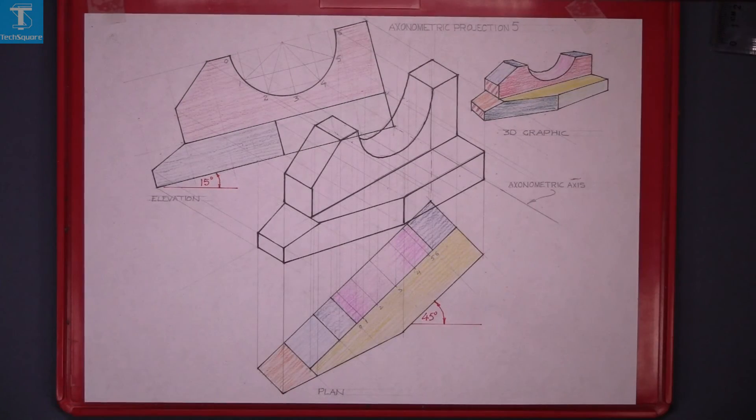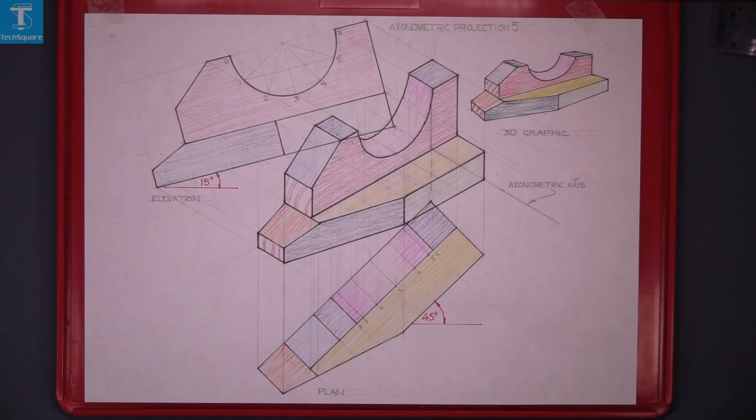Line it in and a little bit of colour added to it. And that's axonometric projection 5 complete.